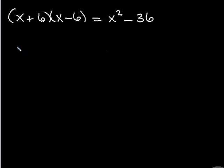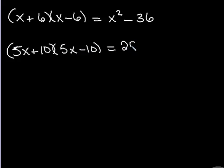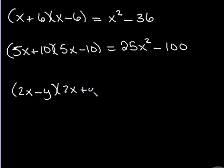So let's do some examples on that. x plus 6 times x minus 6 gives me x squared minus 6 squared, which is 36. 5x plus 10 times 5x minus 10, 5x squared is 25x squared, 10 squared is 100. And this saves us having to FOIL everything out. It works also if I have variables in both places. 2x times 2x is 4x squared minus y squared.